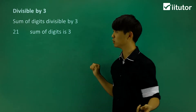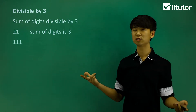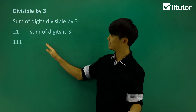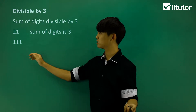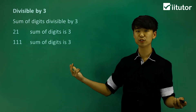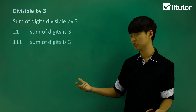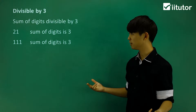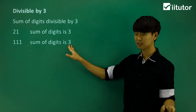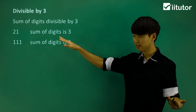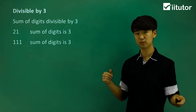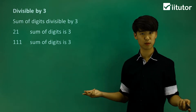That was a small example. What about 111? The sum of these digits is going to be 1 plus 1 plus 1. The sum of the digits is 3. Now since that is also divisible by 3, then the number 111 is also divisible by 3.